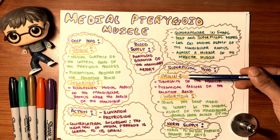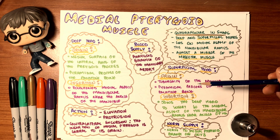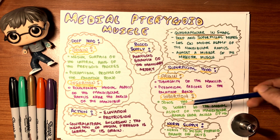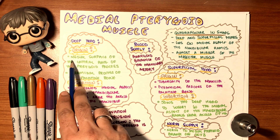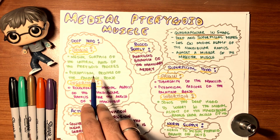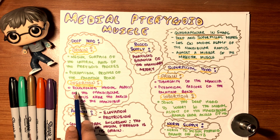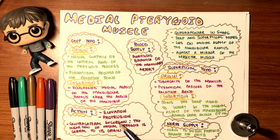The superficial head of the medial pterygoid originates from the tuberosity of the maxilla and the pyramidal process of the palatine bone. Both heads insert into the medial aspect of the mandibular ramus near the angle. The deep head originates from the medial surface of the lateral plate of the pterygoid process and the pyramidal process of the palatine bone.